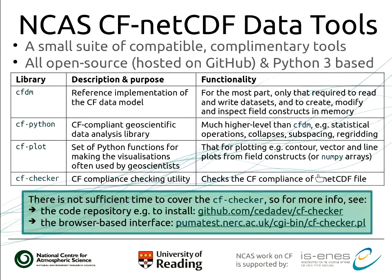The library we have for high-level functionality is called CFPython. It uses CFDM — extends it and provides all that high-level capability. For example, you can perform an abundance of statistical operations, make statistical collapses on data — averages, maximums, minimums — and other things such as re-gridding, which means changing the domain, that concept I highlighted in the data model.